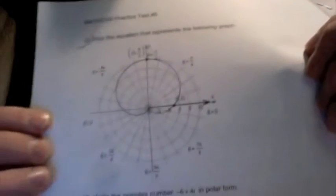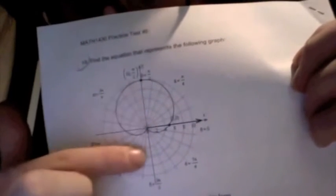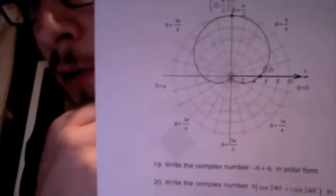So the first thing we can tell is that it's a Limacon, obviously. It's along the y-axis, so it's going to have sine in the equation, and it's mostly above the x-axis, so it's going to be positive. So let's see if we can start writing an equation here.